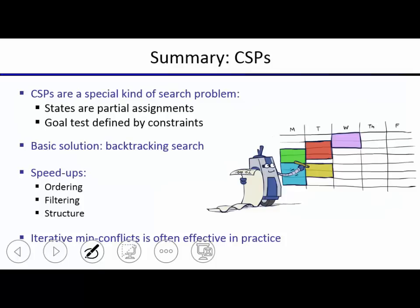In summary: constraint satisfaction problems are a special type of search problem with many applications. Our solution was backtracking search with speedups based on ordering, filtering, and structure — these are the standard search algorithms. You could also use local search; iterative min-conflicts often finds solutions very quickly in practice if solutions exist, but it's not a complete algorithm — it won't tell you when no solution exists. (Correction: if the randomness is good, min-conflicts is technically complete, but it could take infinitely long if unlucky, and it cannot certify that no solution exists.)